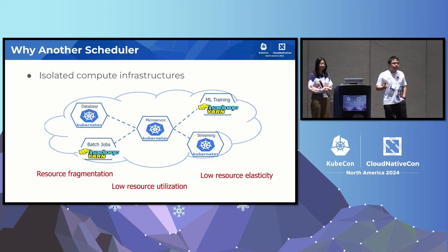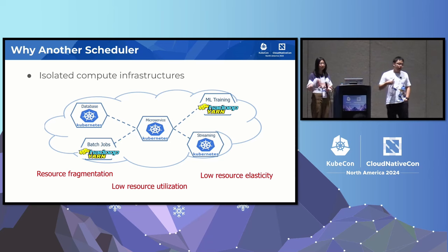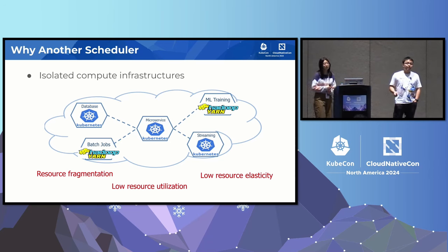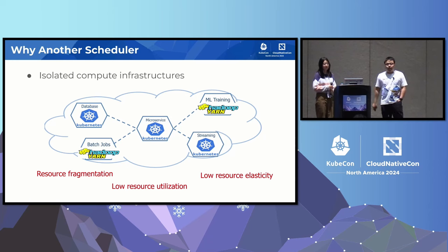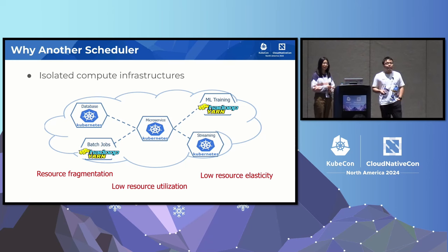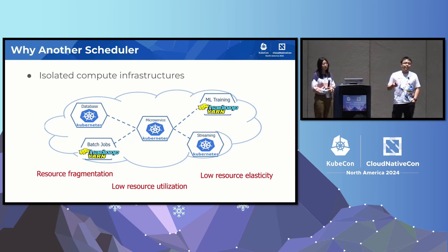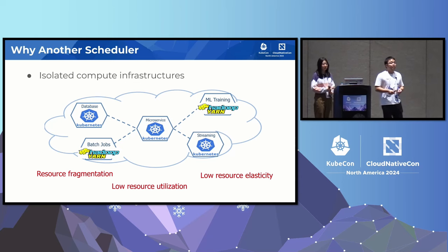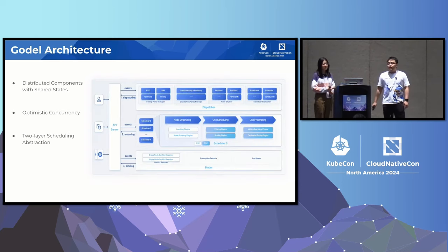Last but not least, before Godel we had isolated computing infrastructure — we ran microservices on Kubernetes and data-intensive applications on YARN. This created a split brain in terms of resource management, making resource utilization improvement and cost optimization very hard. It ended up with major pain points: resource fragmentation, low resource utilization, and poor resource elasticity. Godel is our solution to resolve all such issues.